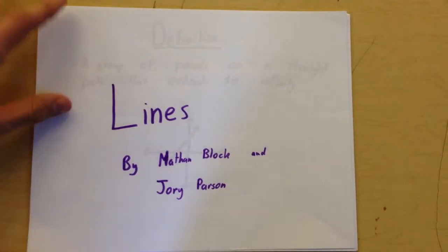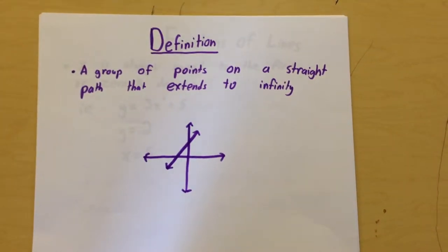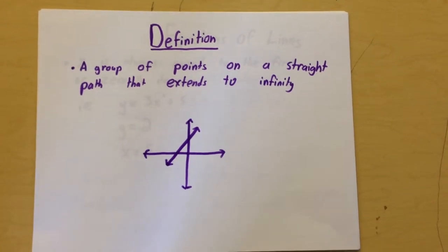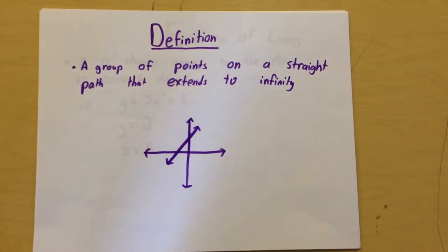Lines, by Nathan Block and Joy Parson. Definition: A line is a group of points on a straight path that extends to infinity.